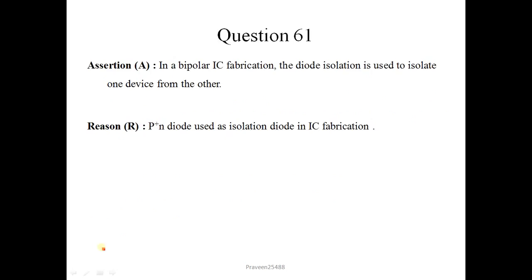Here is question number 61. In a bipolar IC fabrication, the diode isolation is used to isolate one device from the other. This statement is correct. P plus N diode used as isolation diode in IC fabrication. This is also correct but it is not the correct explanation of A. So correct option is 2.